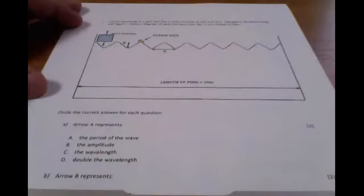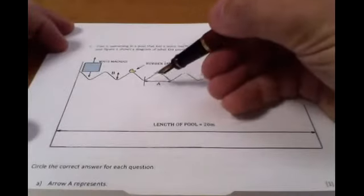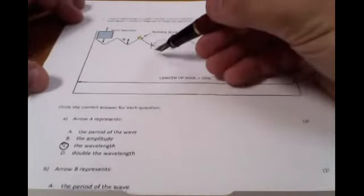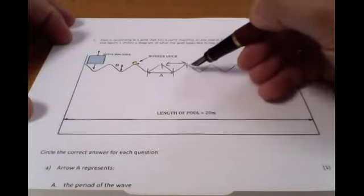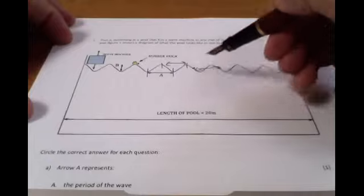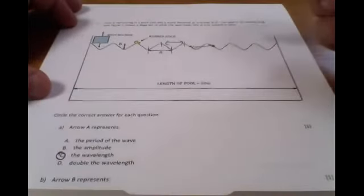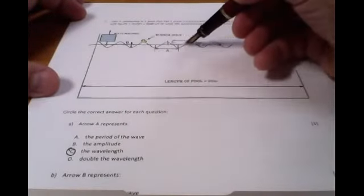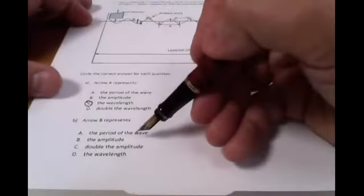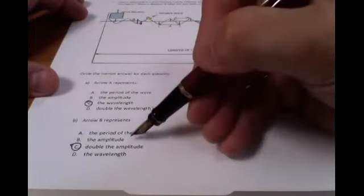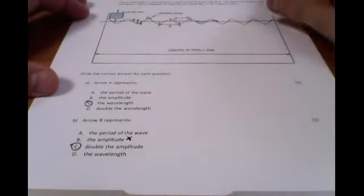It asks which area A represents. A is the wavelength between two repeating points. It could be across there, or even from the midpoint through to the next midpoint. So that is the wavelength. However, the next one asks what arrow B represents. Remember, that is the rest position of the water. Amplitude is the measure of its displacement from its equilibrium. So B represents double the amplitude. Most people would have tripped up and guessed the amplitude.